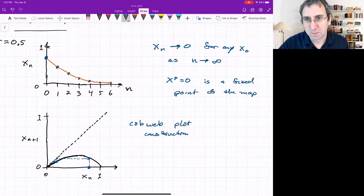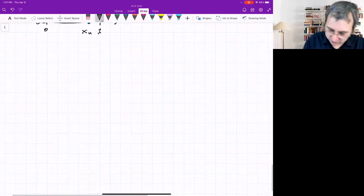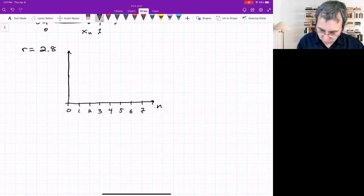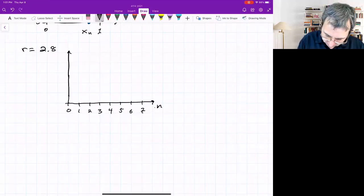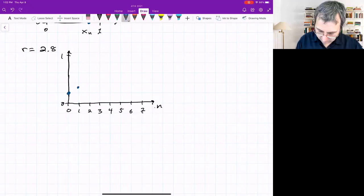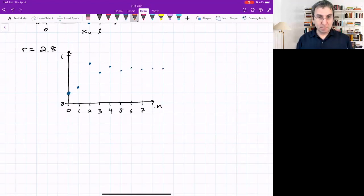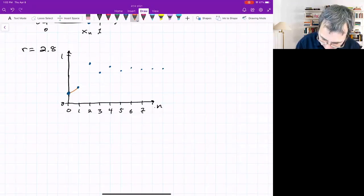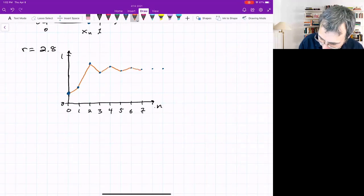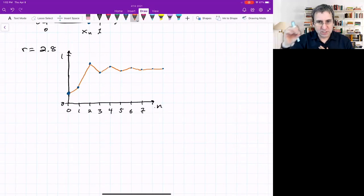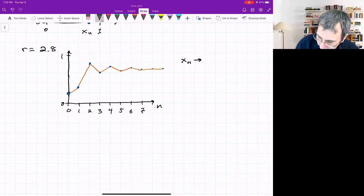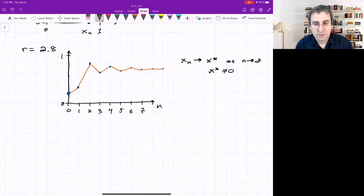What about for something a bit bigger? For r equals 2.8, if I start at some initial condition, the next iterate gets a little further up, then I go up somewhere, but then I go down and it dampens out until I reach a fixed point. It overshoots but eventually settles down to a fixed point that's non-zero.